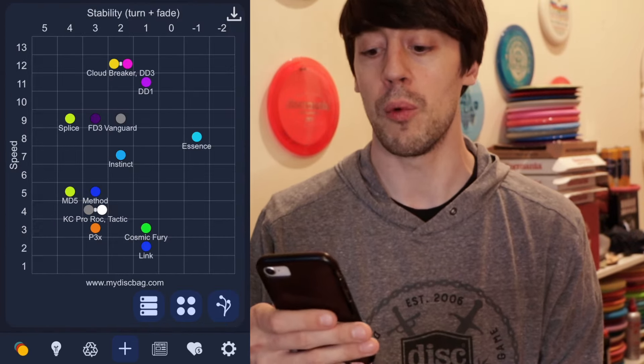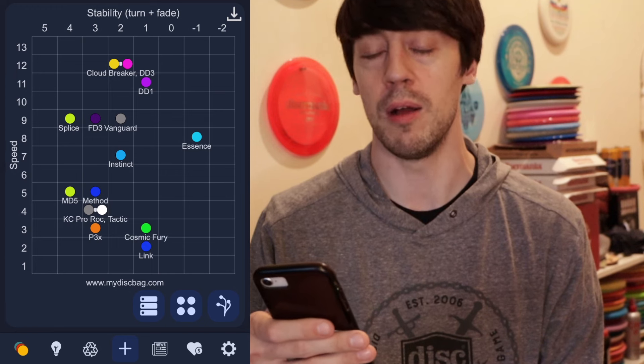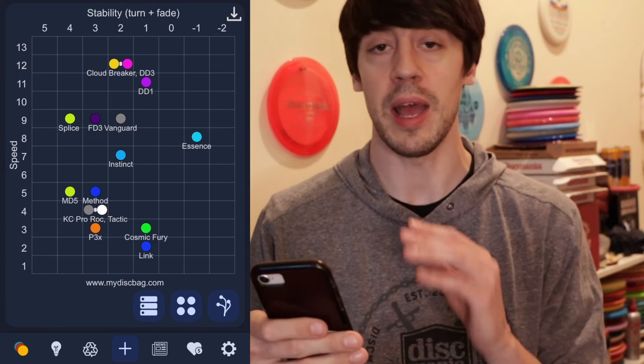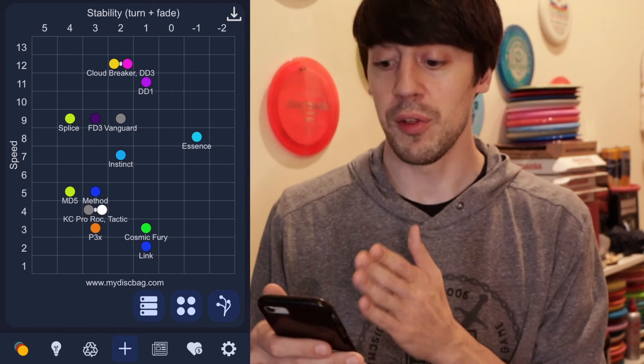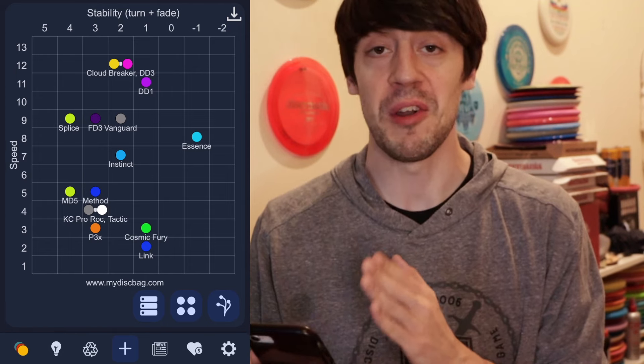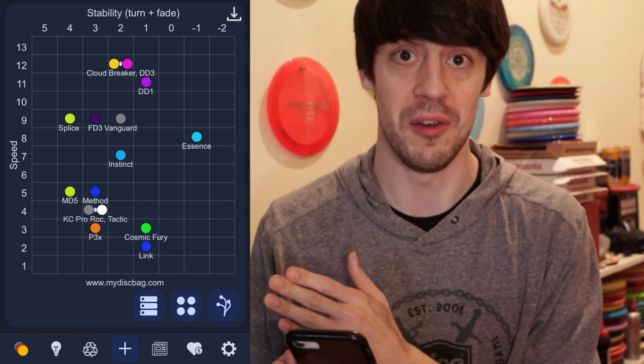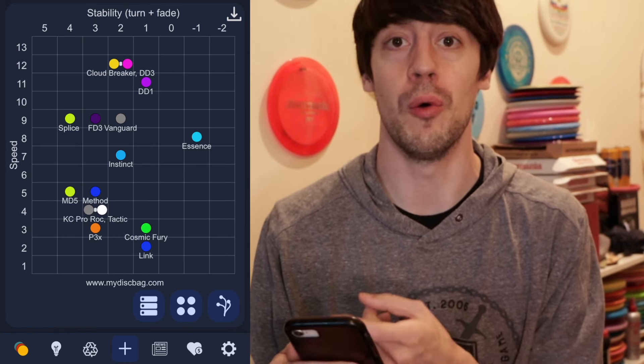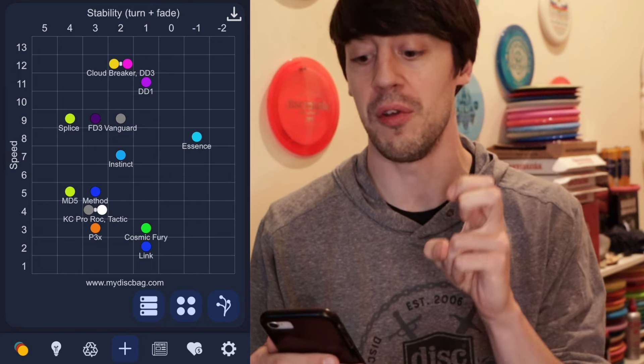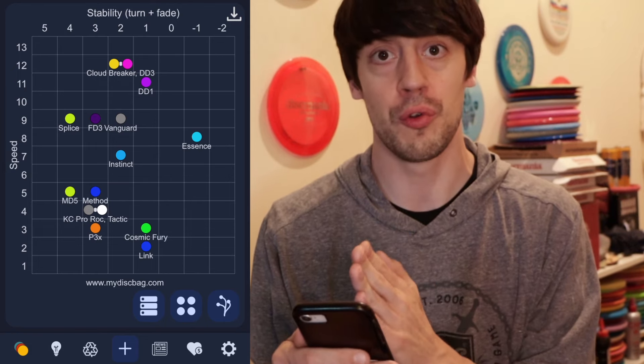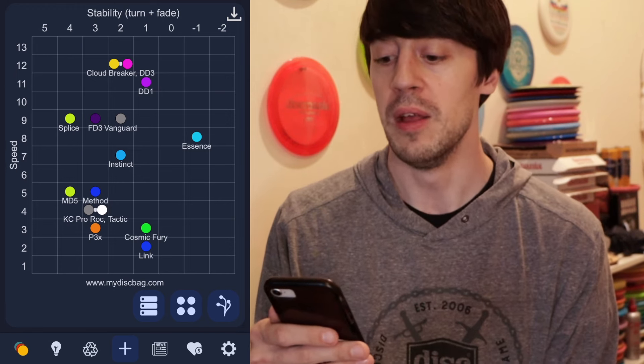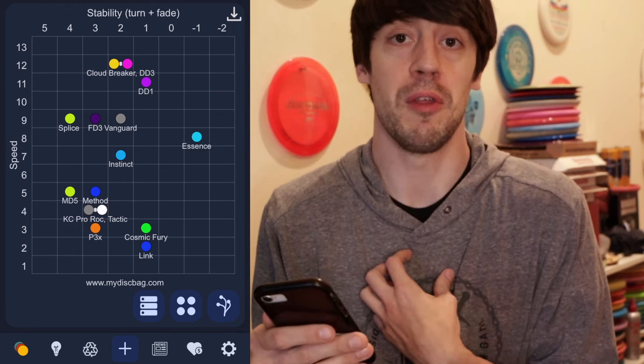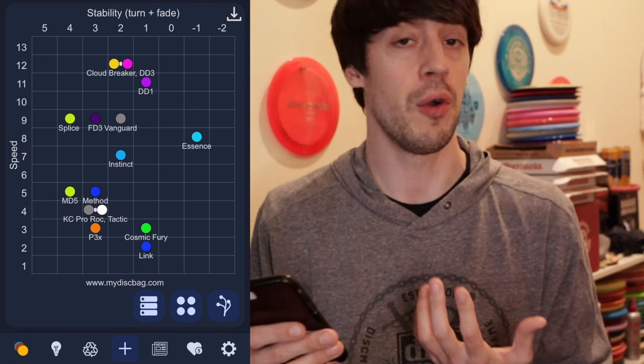Now when I move over one more tab into that little four dot square thing you kind of get this grid. And I think this is my favorite part about my disc bag. Just looking at mine the very first thing that you can see is I don't like to throw understable discs. The Essence is the only disc in my bag that's considered understable. Everything else is either neutral right up the middle or it's leaning towards overstable. So that's true. I'll be the first to admit I do not like to throw understable discs.